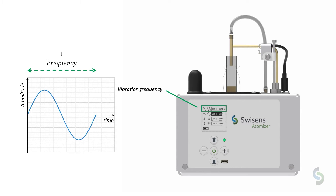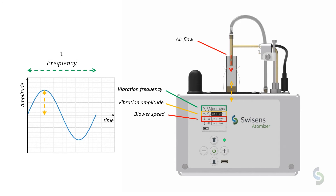Frequencies in the order of 50 Hz have been found to perform well for particles with a size of a few 10 µm, such as pollen. To control the number of dispersed particles, the vibration amplitude can be changed. Larger values — meaning a longer pathway the cuvette travels per vibration cycle — typically cause more particles to be aerosolized, thereby increasing the particle concentration. Another setting to control the aerosolization efficiency is the air blower speed, which changes the amount of air blown into the cuvette and in turn picks up particles.